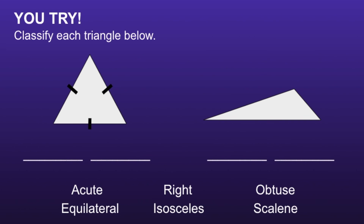Alright, let's see if you are correct. The first triangle is an acute equilateral triangle, and the second triangle is an obtuse scalene triangle. If you had either of these incorrect, I would recommend you go back and try to find your mistake. Thank you very much for watching!